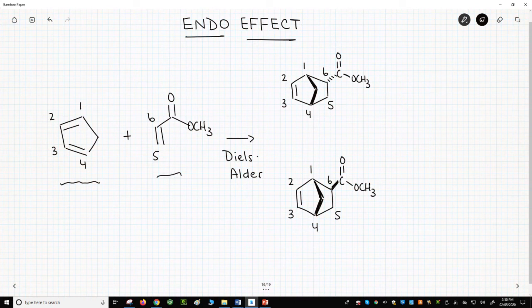The dienophile is methylacrylate. This reaction can give two different products. I've shown one on the top and the other on the bottom. These are diastereomers of each other.